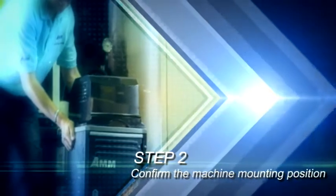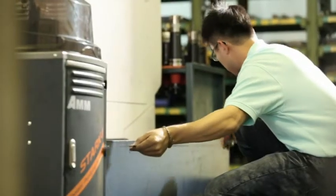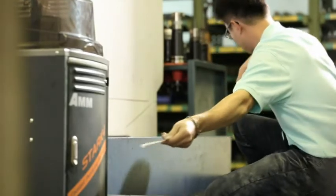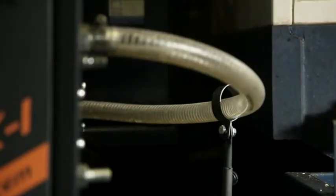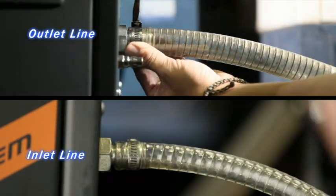Step 2. Confirm the machine mounting position. Measure the length of the unit and the tank pipe and cut the pipe to the appropriate length, and then connect all pipes to the designated positions in the machine.